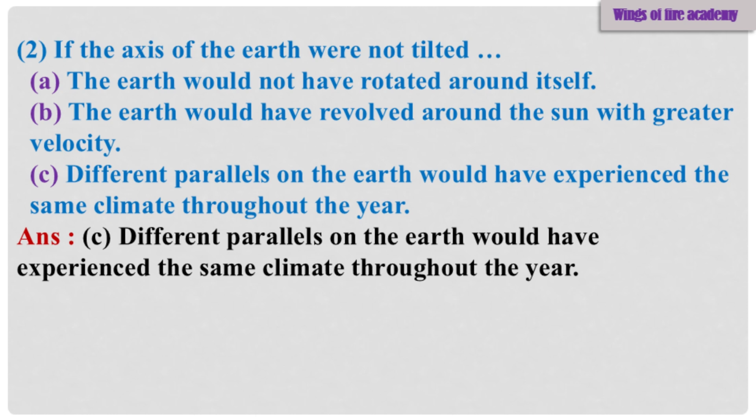Sub-Question 2: If the axis of the earth were not tilted — A. The earth would not have rotated around itself. B. The earth would have revolved around the sun with greater velocity. C. Different parallels on the earth would have experienced the same climate throughout the year. Answer: C. Different parallels on the earth would have experienced the same climate throughout the year.